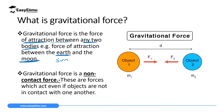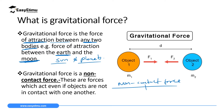The force of attraction between the Sun and the planets, or between planet Earth and the Moon which is a satellite, is a gravitational force. Gravitational force is a non-contact force, meaning the attraction takes place without the two bodies touching each other. These are forces which act even if the objects are not in contact with each other.